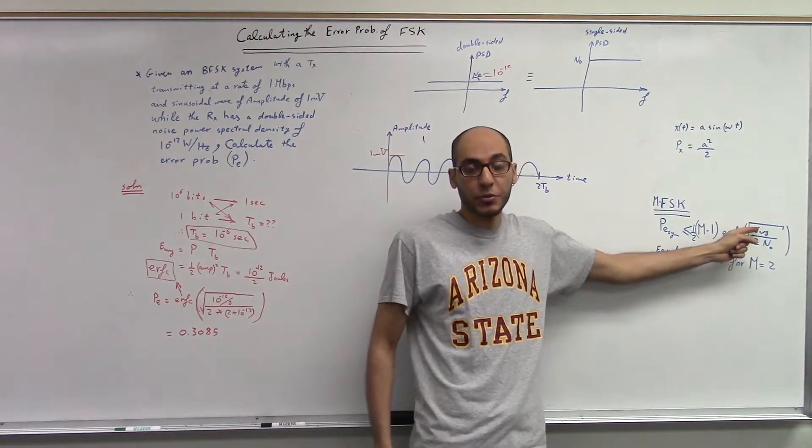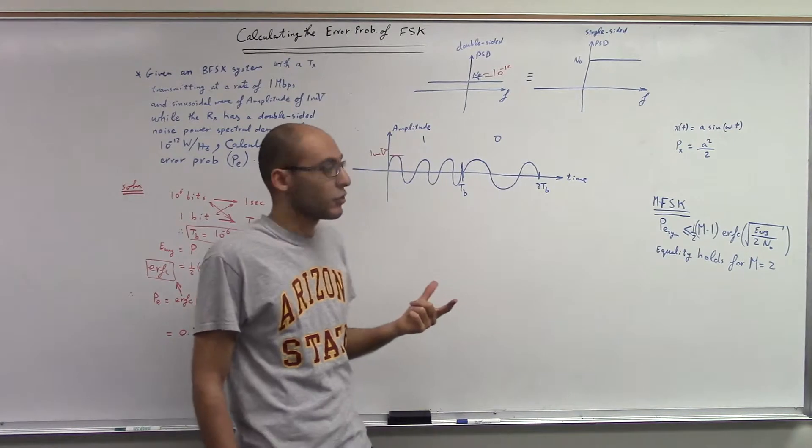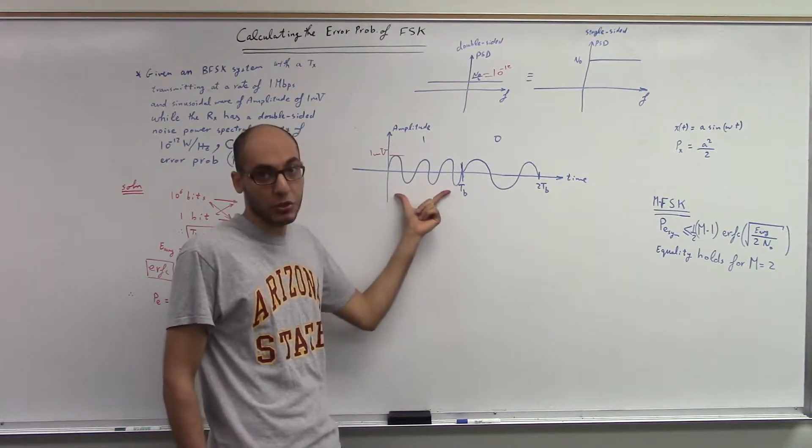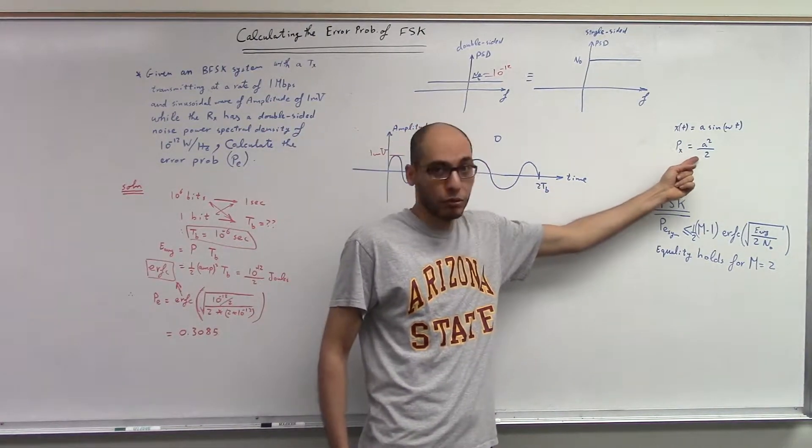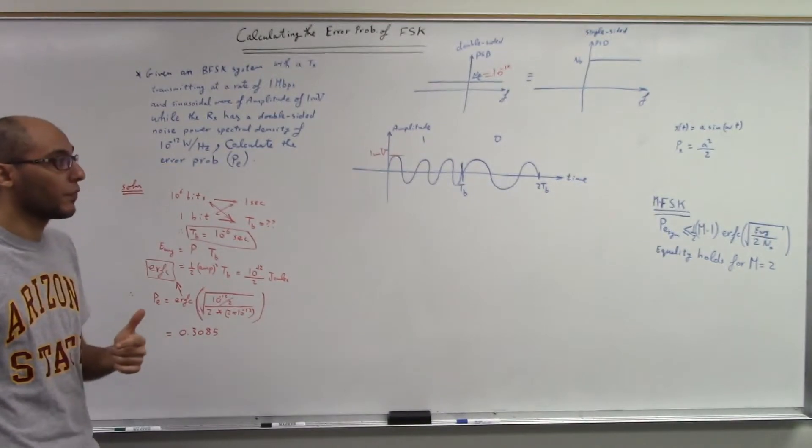Of course, it's supposed to be the average energy per symbol, but one symbol has one bit, and that's why it's the average energy. So I need to calculate the power of the sinusoidal signal, A squared over 2, and then multiply by the duration of one bit.